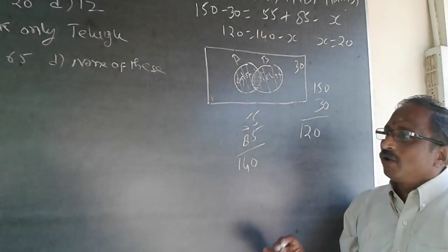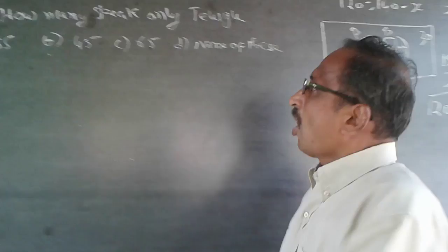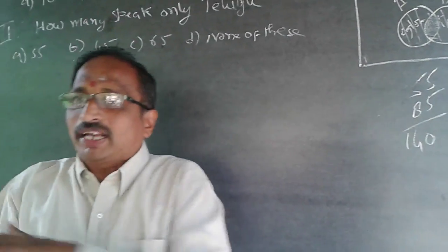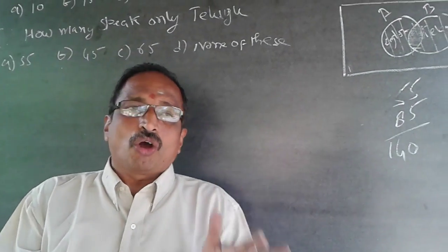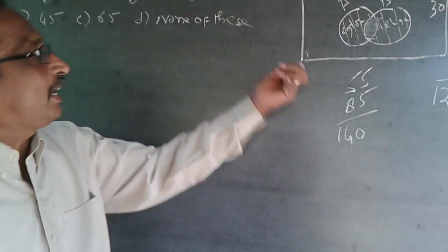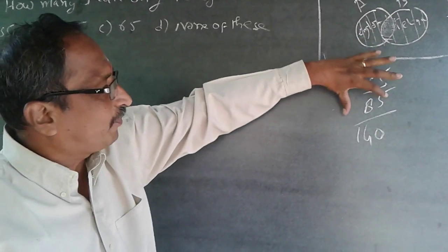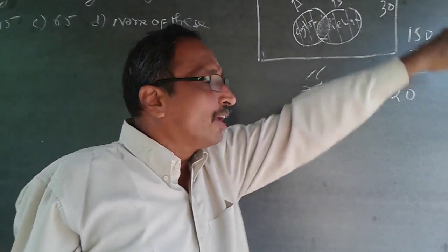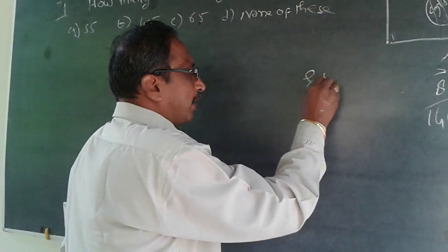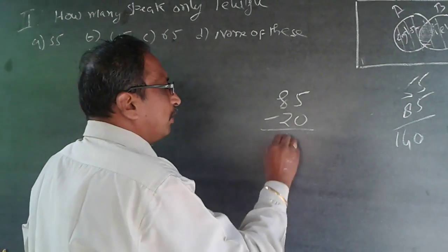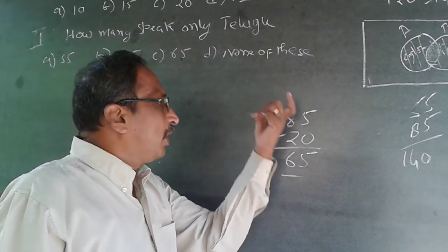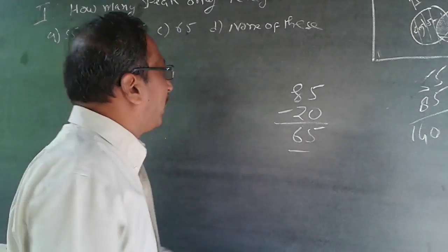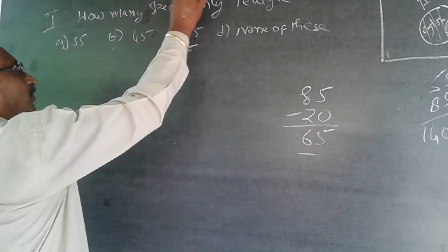The second part: how many speak only Telugu? 'Only' means they should not know anything other than Telugu. What is given is 85 speak Telugu, of which 20 also know English — the intersection is 20. So only Telugu = 85 minus 20 = 65. The answers are 20 and 65.